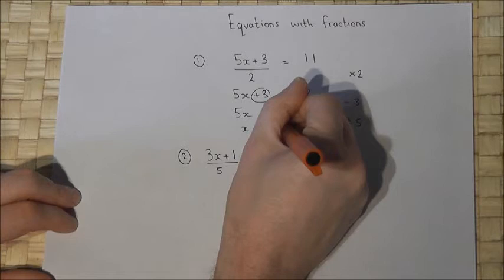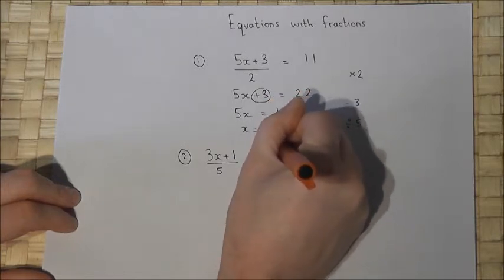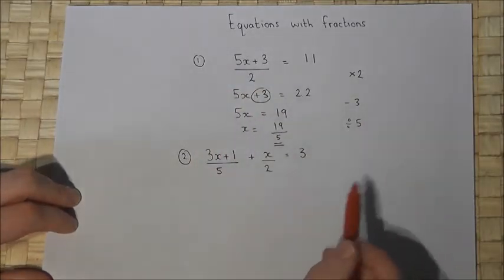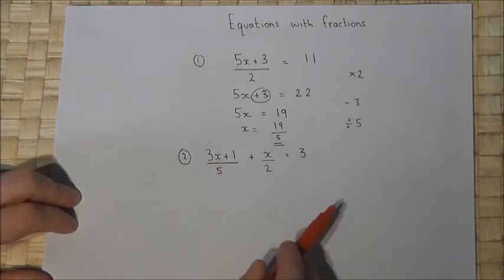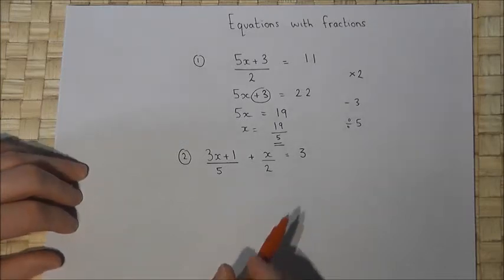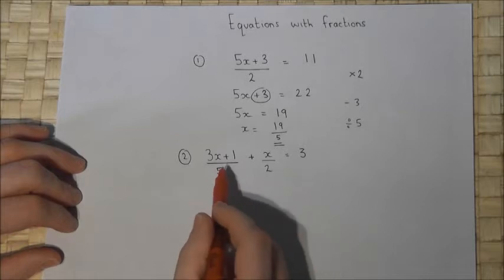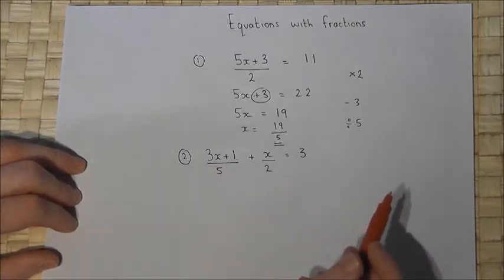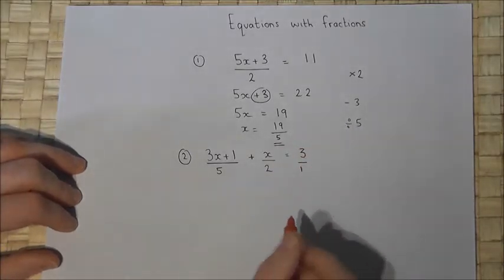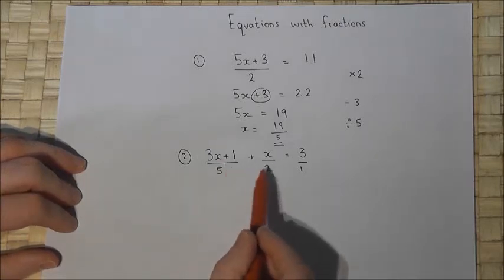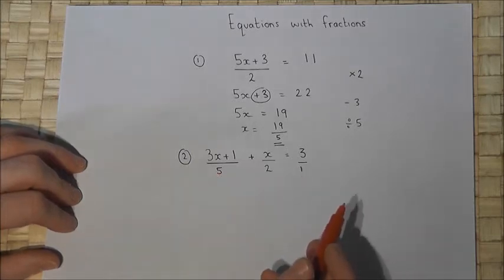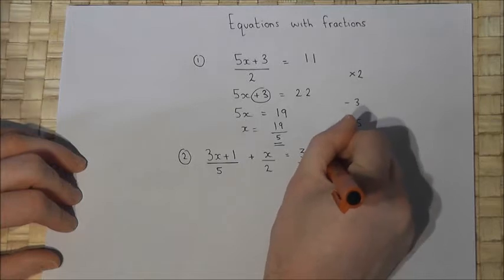When there is more than one fraction, my method is as follows. I start by writing each term as a fraction — for example, the 3 can be written as 3 over 1 because 3 divided by 1 is still 3. I then try to write each of the fractions over the same number.